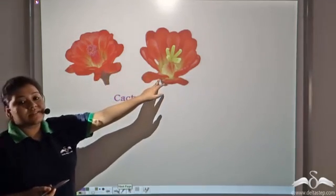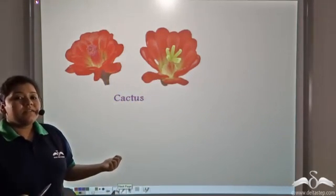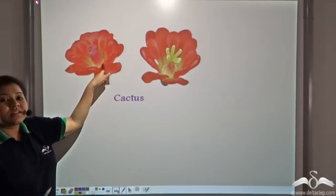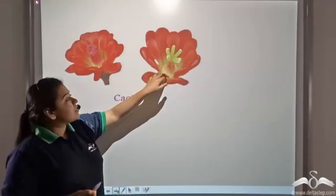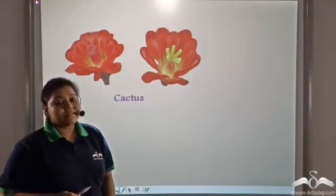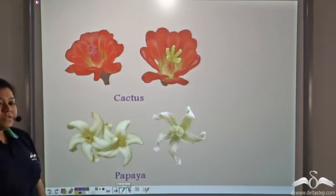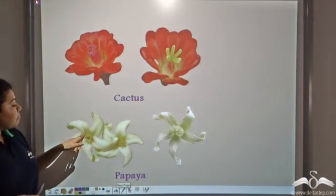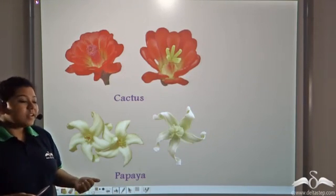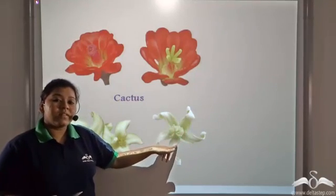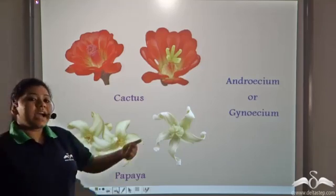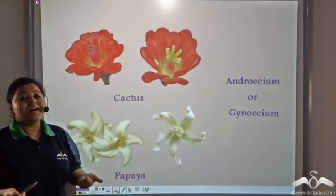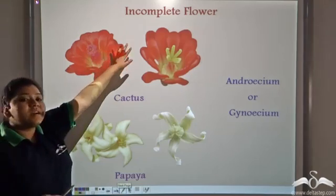Now notice these two flowers — both of them are cactus flowers. If you closely look at this flower, you will see that the gynecium is missing, and in this flower, the androsium is missing. Similarly, if you see a papaya flower, both flowers are papaya flowers, but one does not contain the gynecium and the other does not contain the androsium. Since an important whorl is missing, they are known as incomplete flowers.